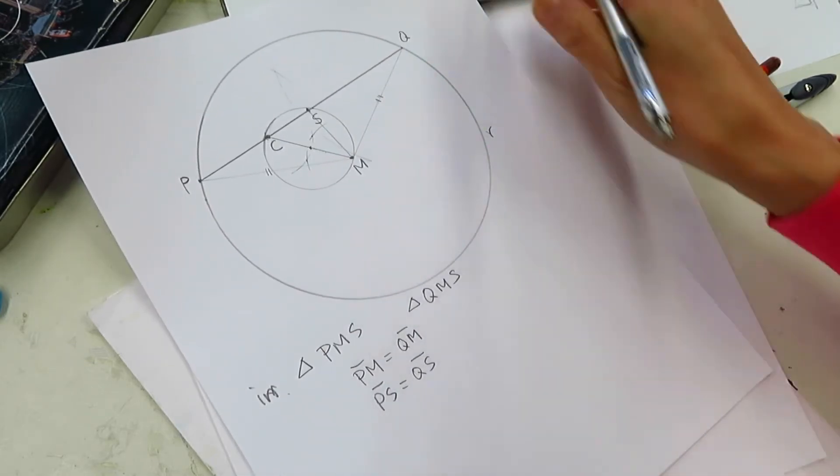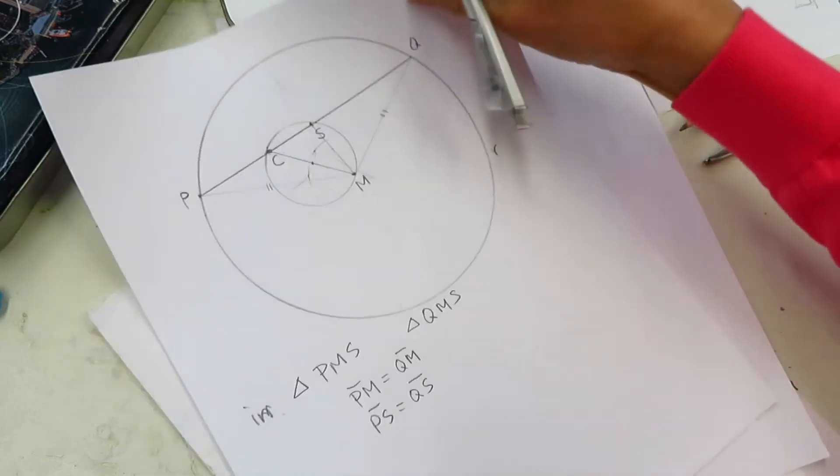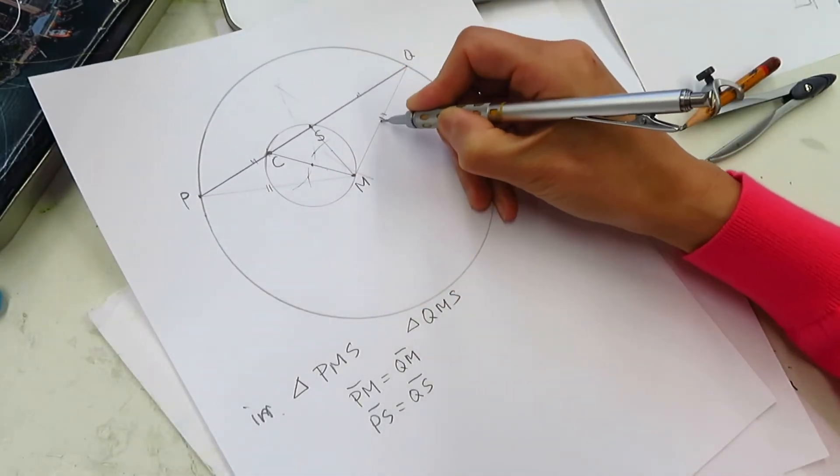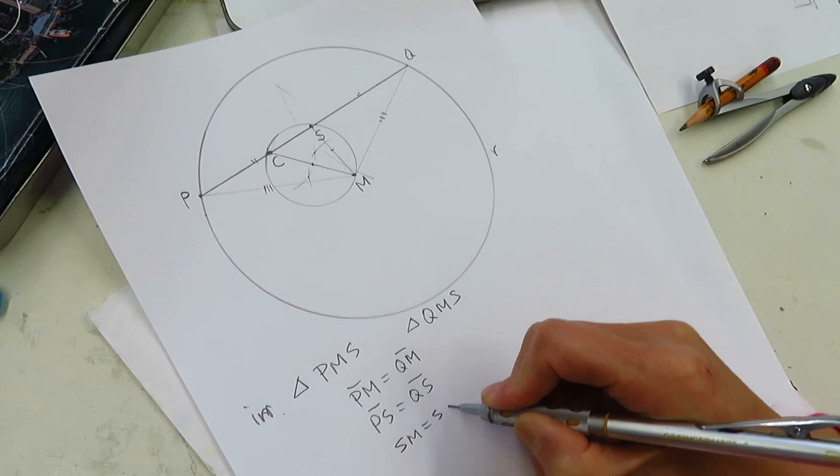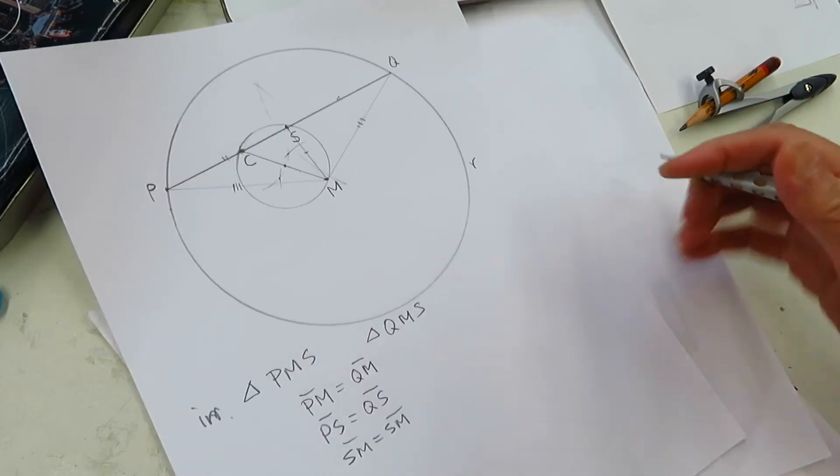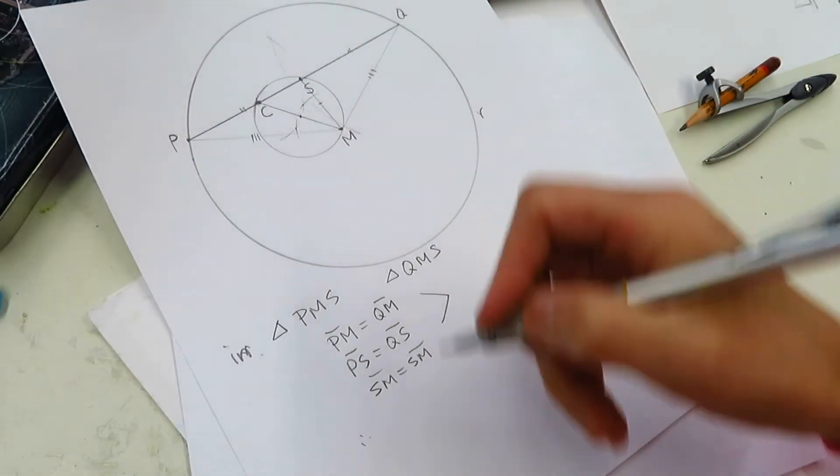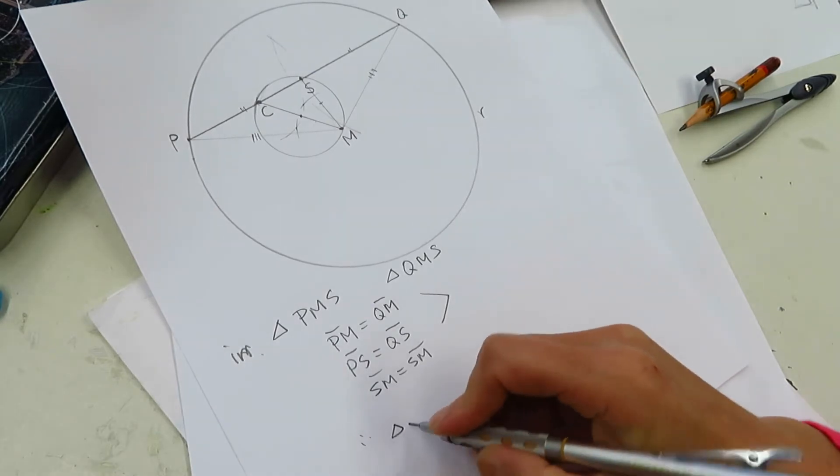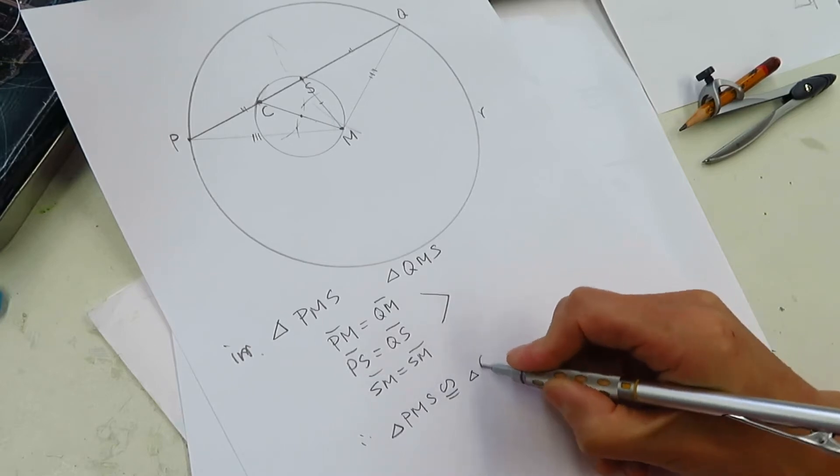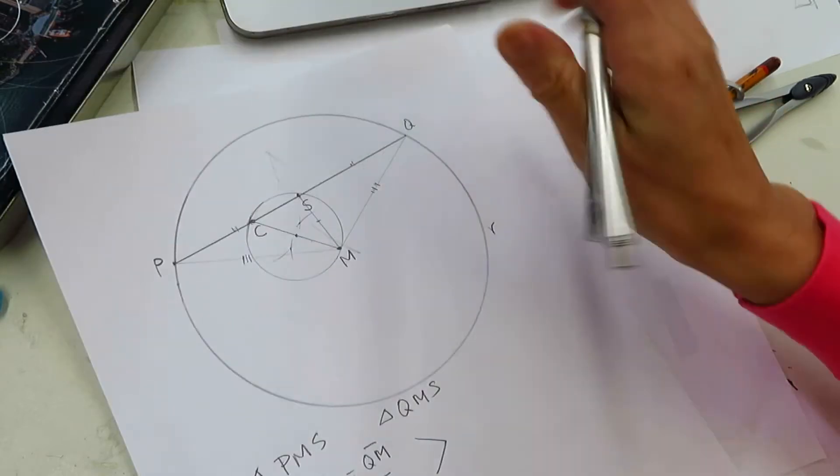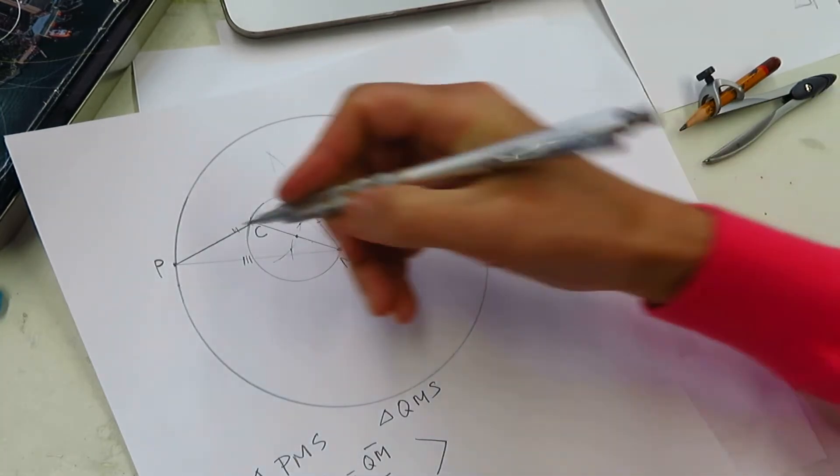Another thing we know, SM equal SM, because they are the same. Now we get to the approval that triangle PMS is congruent to triangle QMS. So these two triangles are congruent.